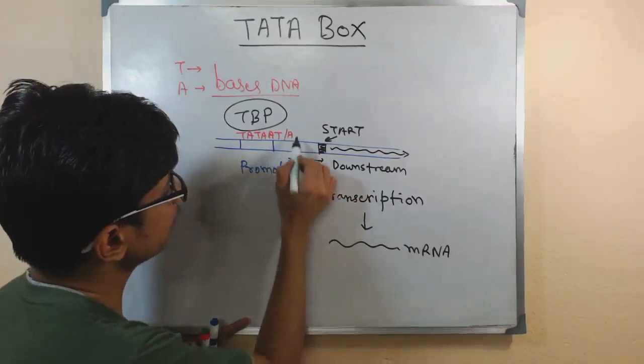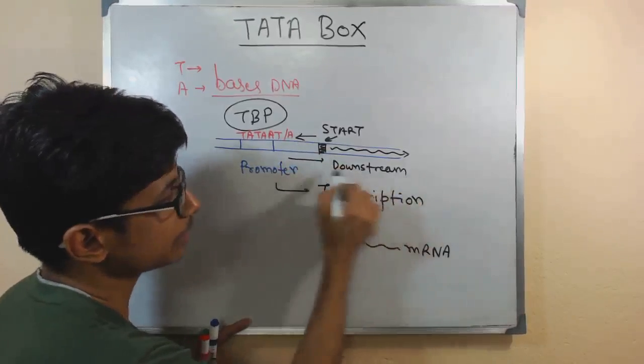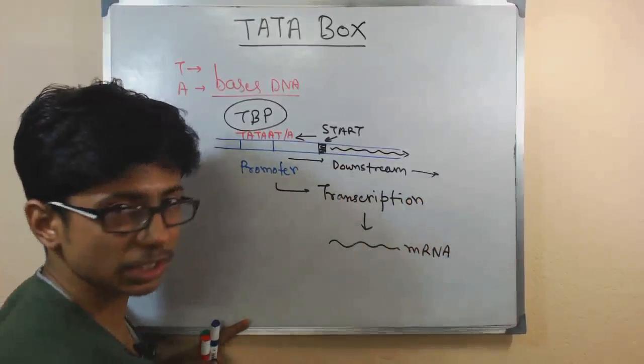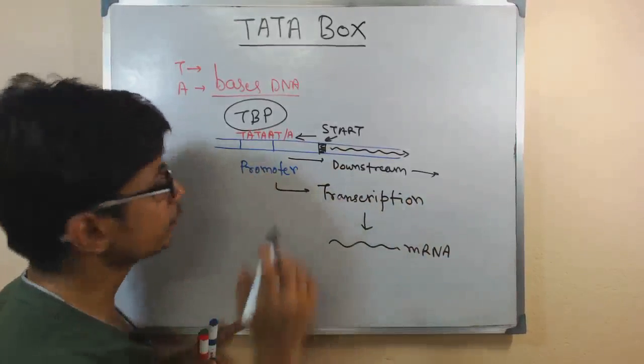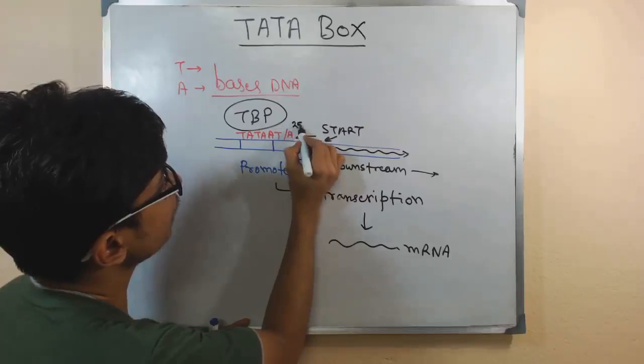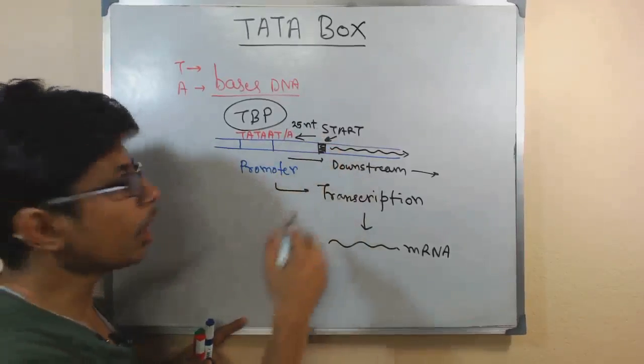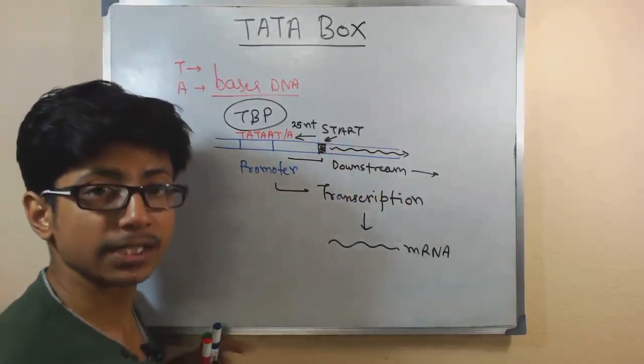If this is the start site, everything here, this is the upstream, this is the downstream. This direction is the downstream. Usually the promoter is found, the TATA box is found 25 nucleotide upstream of the actual transcription start site.